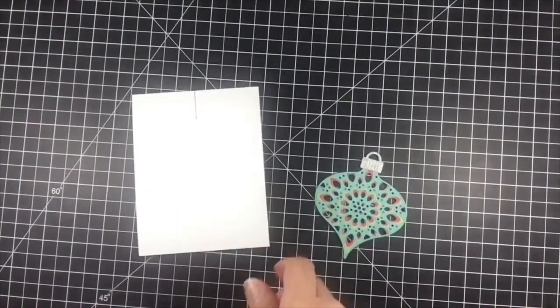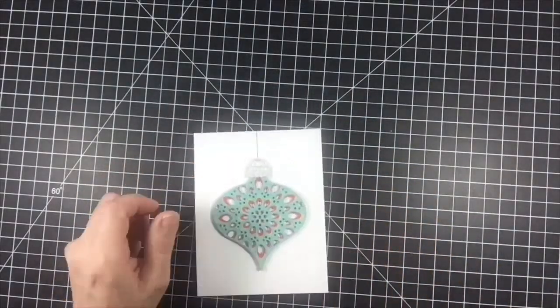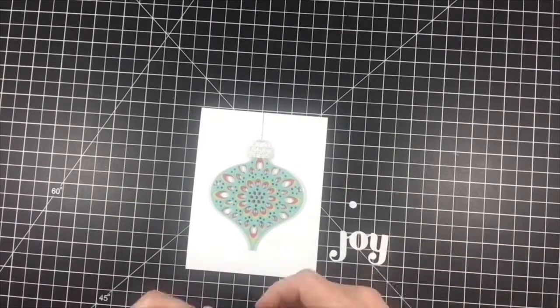Before I attached the ornament to the card base, I added tiny pieces of foam tape discreetly behind the ornament and then adhered it so the cap met up to the string that I drew onto the card.